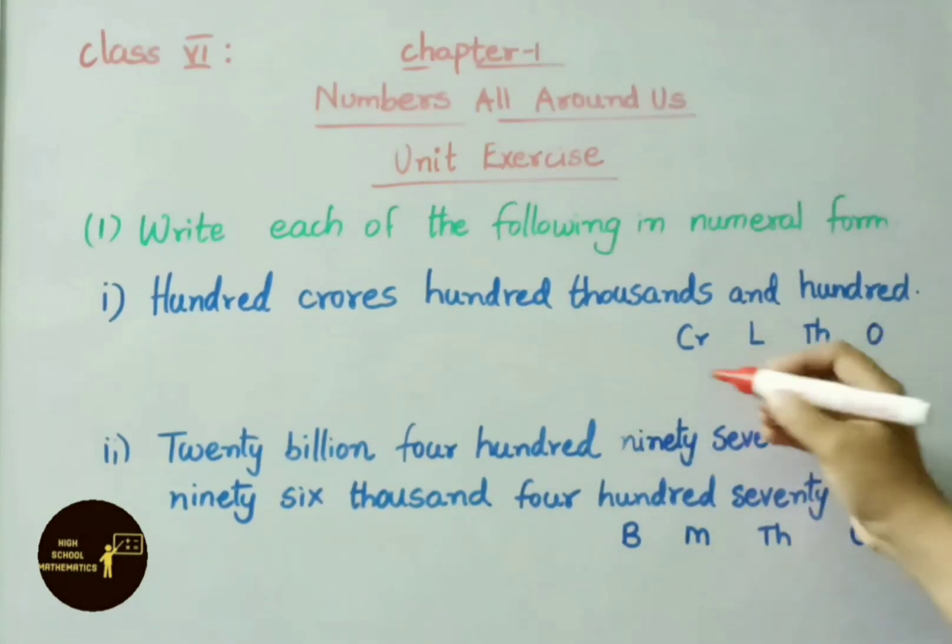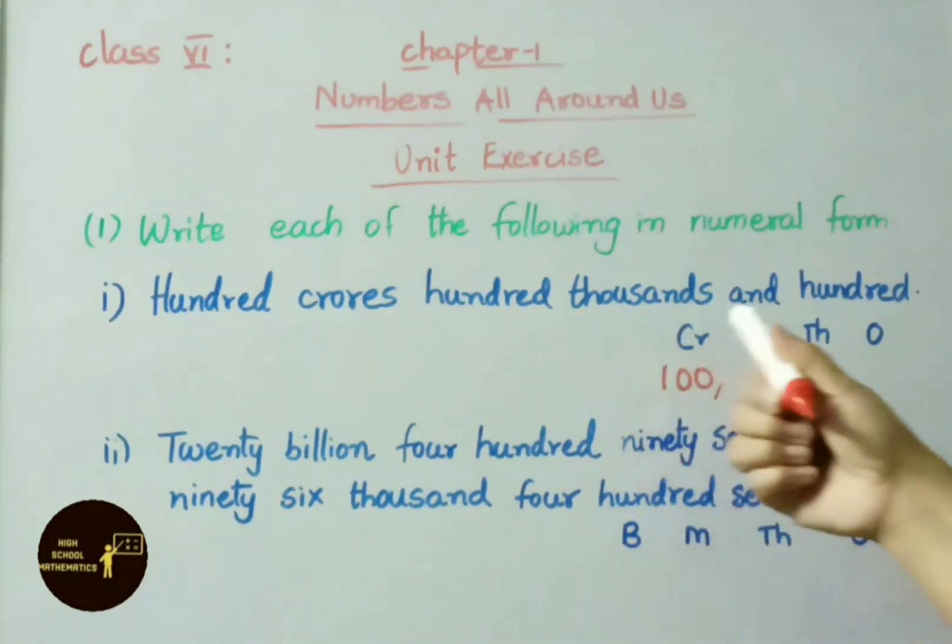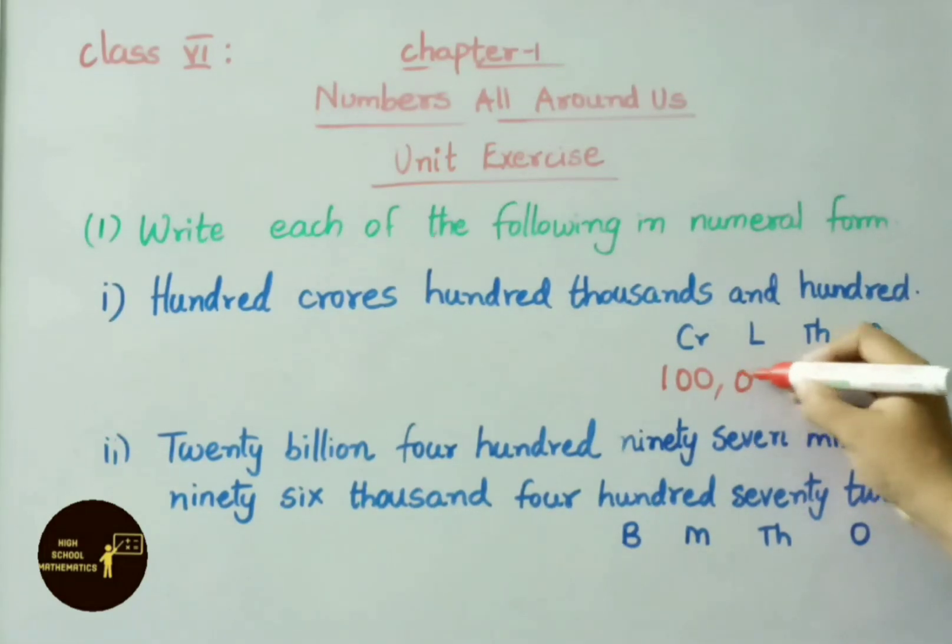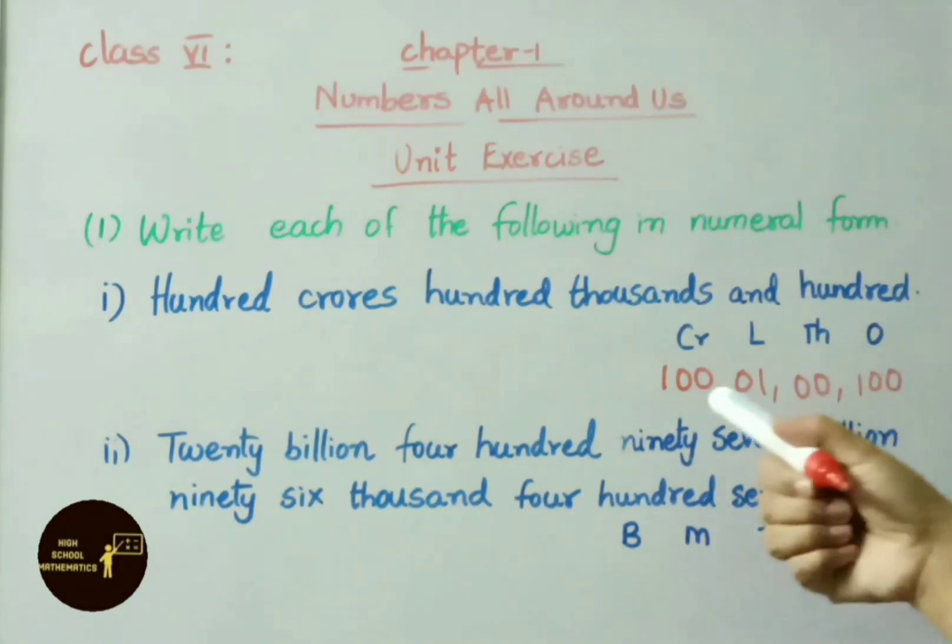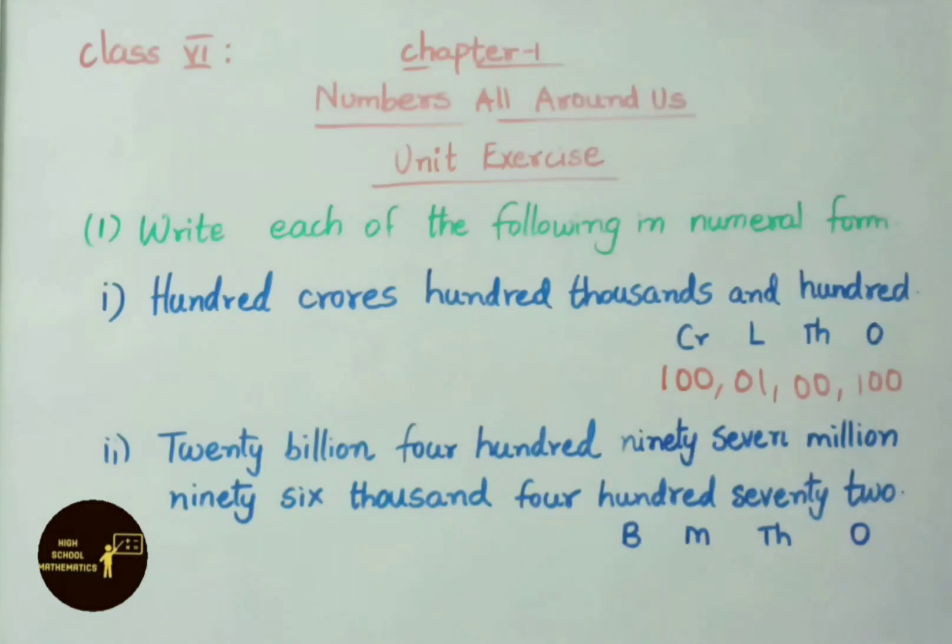100 crores, crores below you mention 100. 100,000 means 1 lakh. Lakhs below you mention 01, thousands place you mention 2 zeros. Last one is 100, under ones period you mention 100. So this is our number 100 crores, 1 lakh, 100 or 100 crores, 100,000 hundred.